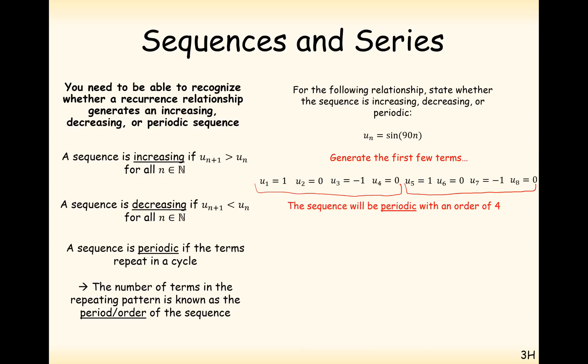And that makes sense to us because the sine curve repeats itself every 360 degrees. So yes, that would make sense. The sequence here will be periodic with an order of 4.